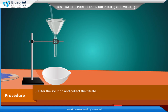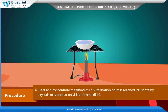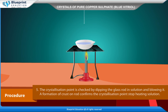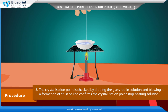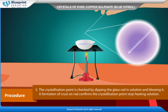Filter the solution and collect the filtrate. Heat and concentrate the filtrate till the crystallization point is reached. A crust of tiny crystals may appear on the sides of the china dish. The crystallization point is checked by dipping the glass rod in the solution and blowing it — a formation of crust on the rod confirms the crystallization point.